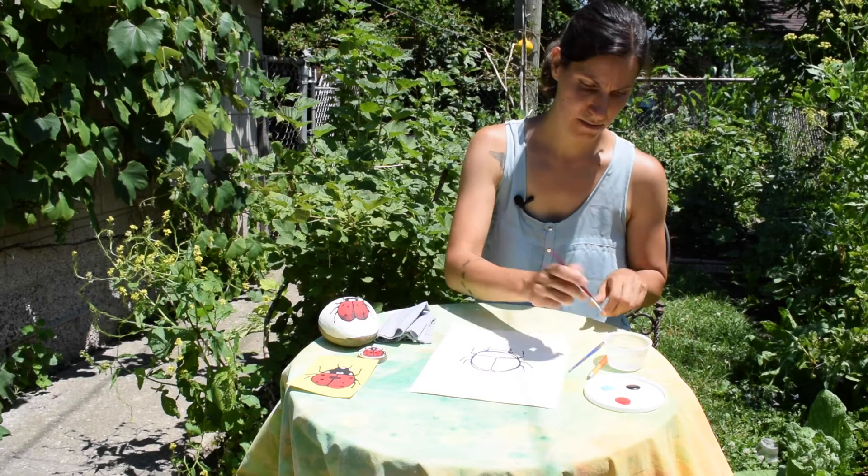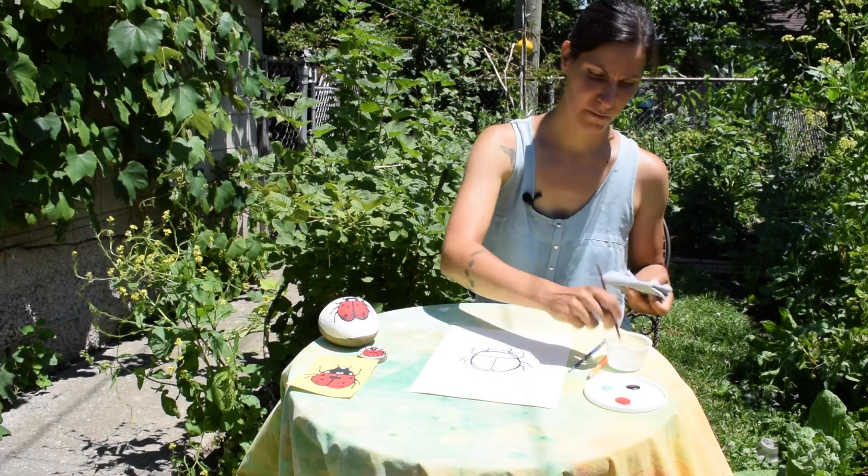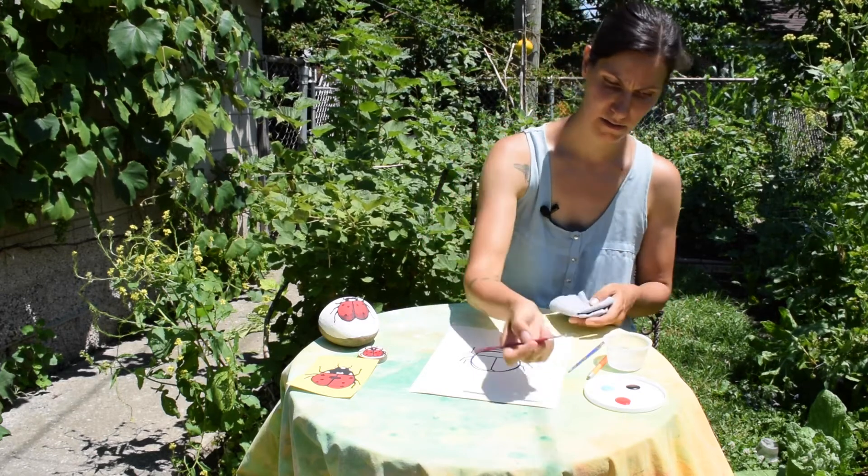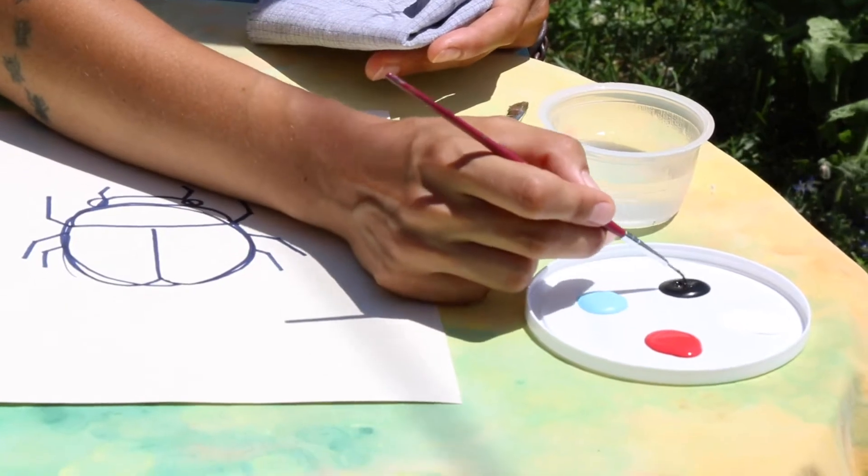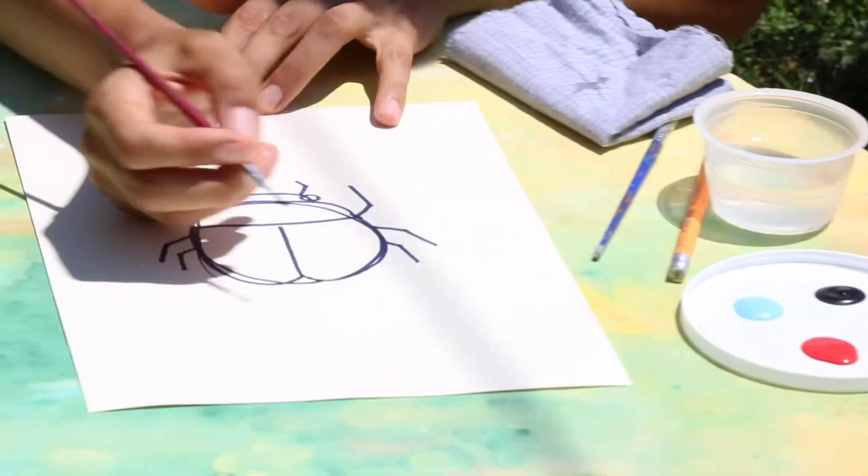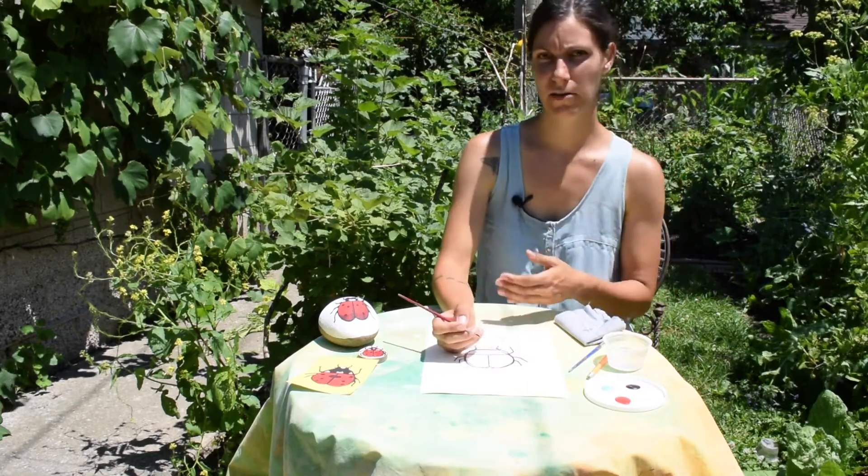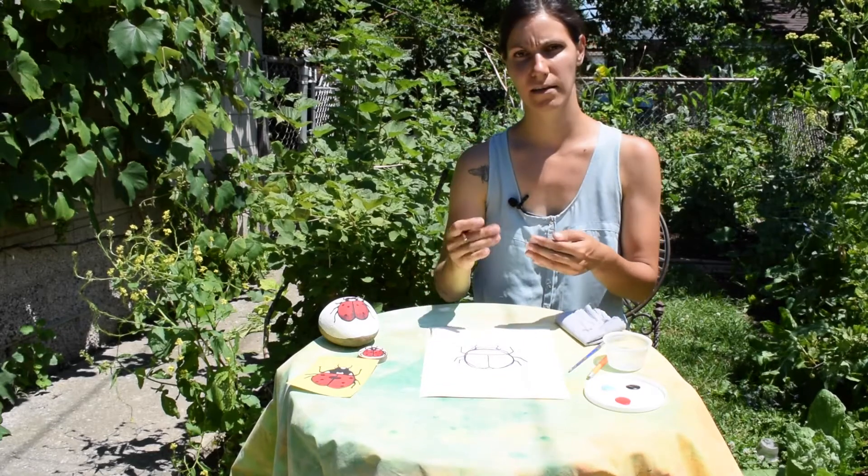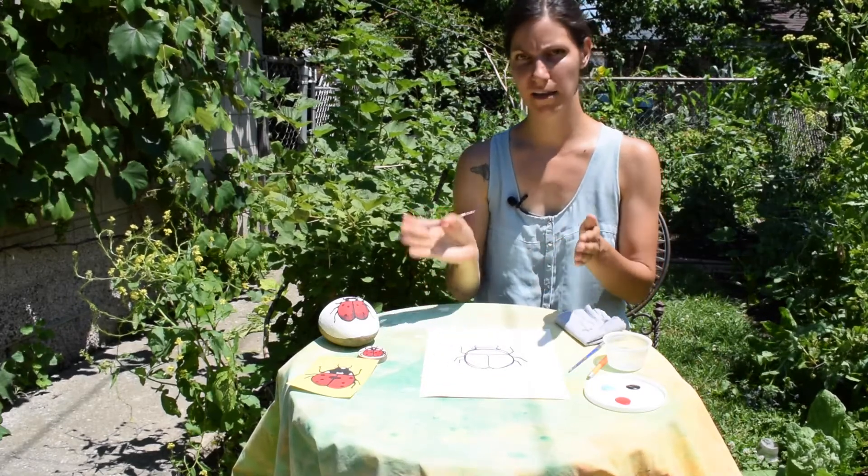So now we're going to get our paints. I like to start by wetting my paint brush a little bit and then wiping it off. Let's get some black paint on our brush. So we don't have to be too careful here because since we're painting the outline first and then the colors up against the outline, you can kind of fix anything that you don't really like by making the color overlap the outline.